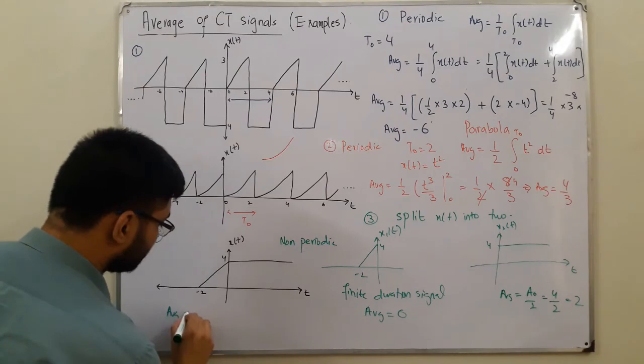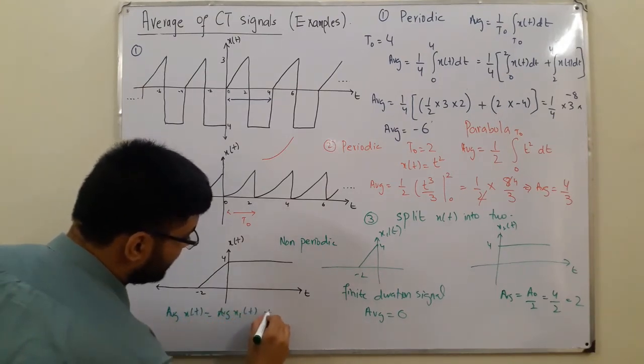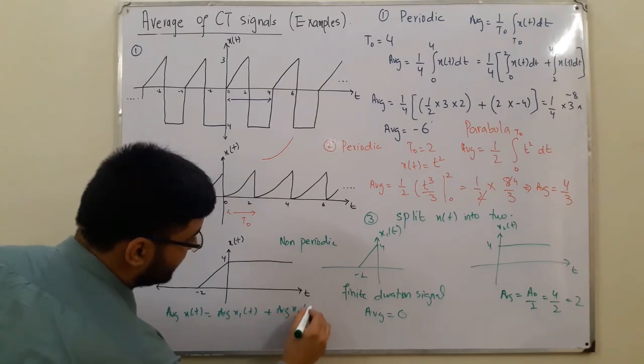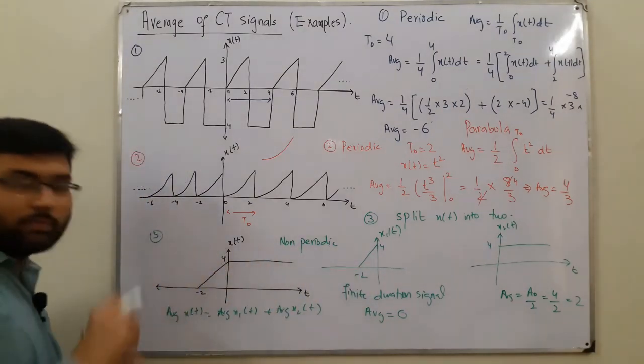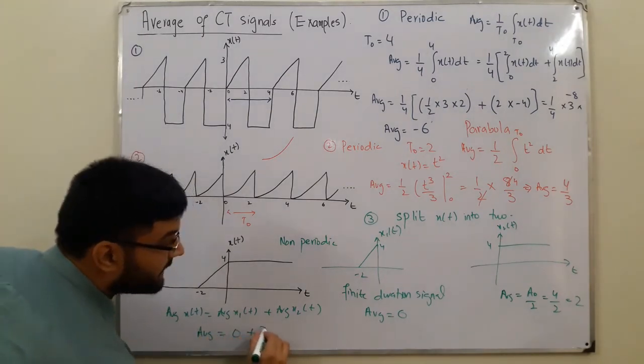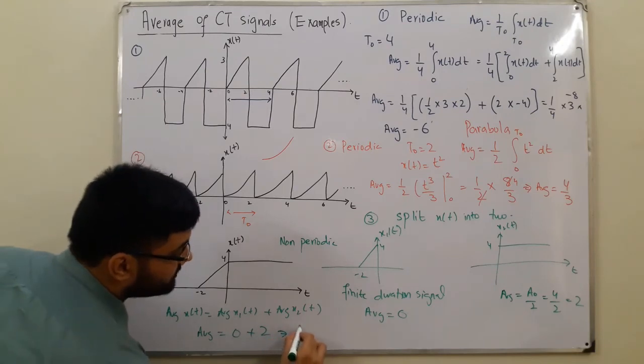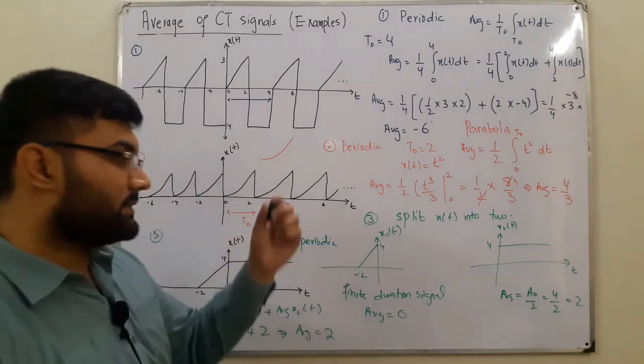Now you combine this. So the average of x of t would be average of x1 of t plus average of x2 of t, both of its constituent parts. So the average of x1 of t is 0, and average of x2 of t is 2, so which implies that the average for this particular case is 2, and that's the answer.